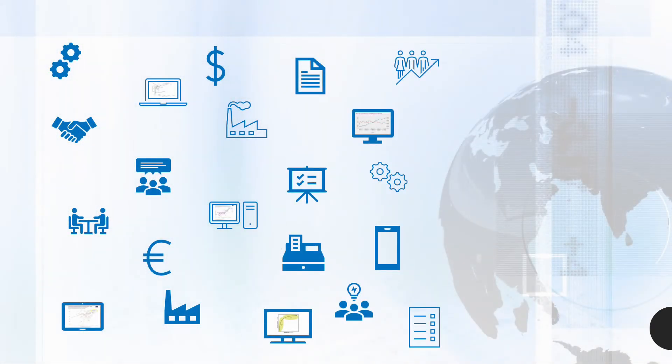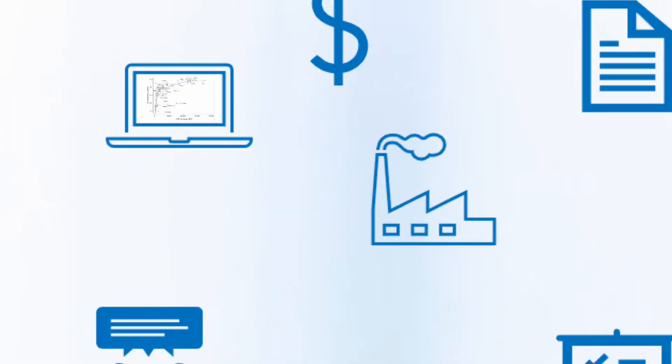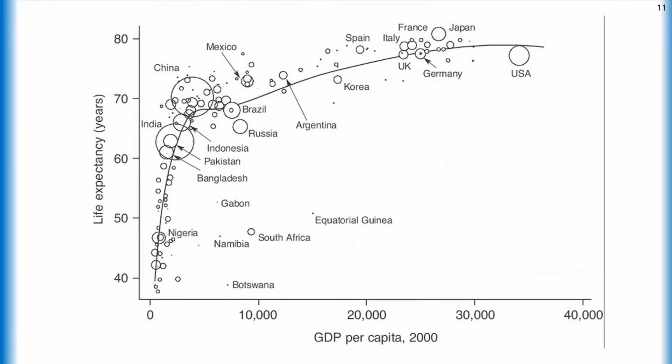One indicator used to gauge standard of living is life expectancy. In the early stages of economic growth, there is a strong correlation between GDP per capita and life expectancy, which on this graph is up to approximately $5,000. Translated into 2022 dollars, this comes out to around $8,000.